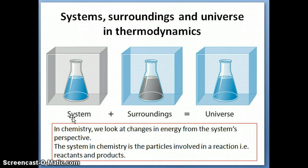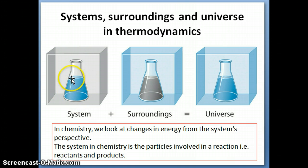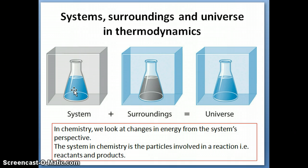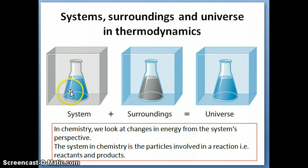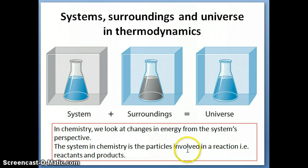The system is basically the part of the universe whose energy we're specifically interested in looking at. So in this particular case of a reaction — here's a chemical reaction, for example — the reaction occurs inside this flask. So really the system for chemists is just the things that are inside the flask. We don't care about the flask or the box around it. We just look at the molecules of the reactants and products. In chemistry, we look at changes in energy from the system's perspective — only the energy of the reactants and the products, before and after a reaction.